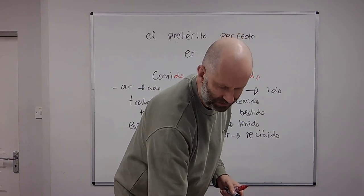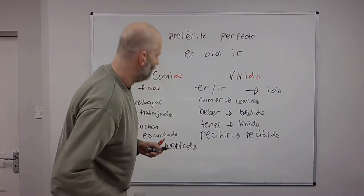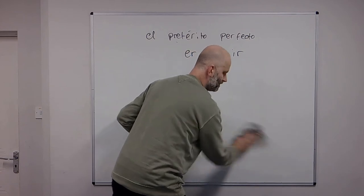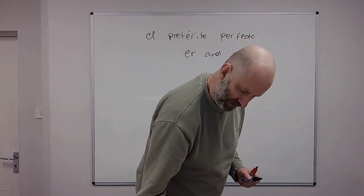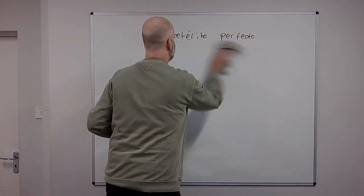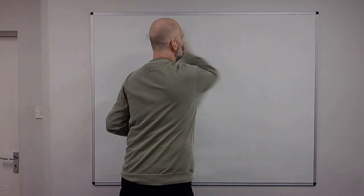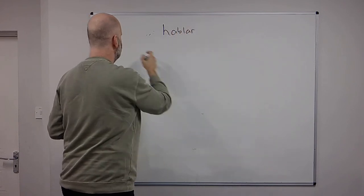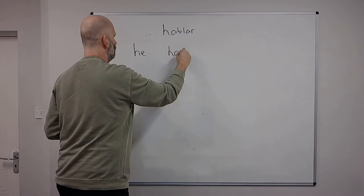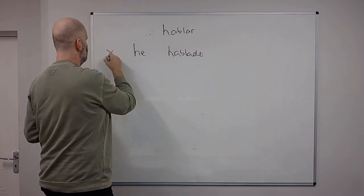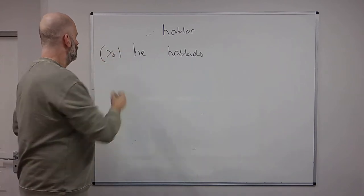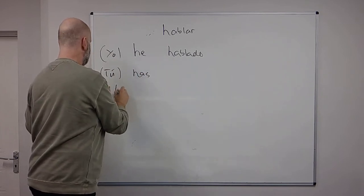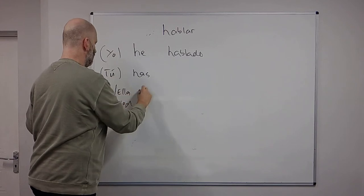What we can do now is look at how the past participles combine with the verb haber. So if we just look at a verb like an AR verb, hablar. So it's going to be I've spoken, he hablado. And then, yo he hablado, or we don't always need the yo. Tú has hablado. Él, ella, usted ha hablado.